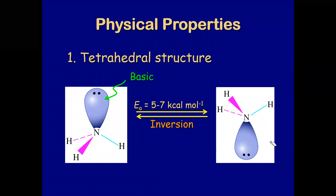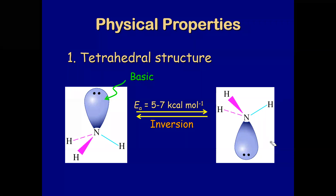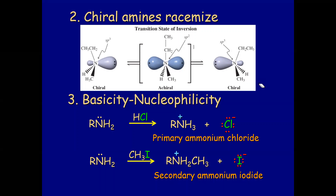Now let's speak about physical properties. Amines are tetrahedral. Why? Because nitrogen has three bonds and one lone pair, giving it a tetrahedral structure. As it's tetrahedral, it can therefore have chirality. However, in nitrogen-containing compounds there is inversion between one side and the other because the lone pair can flip. This inversion requires around 5 to 7 kilocalories per mole — energy that is available at room temperature — so inversion happens constantly at room temperature.